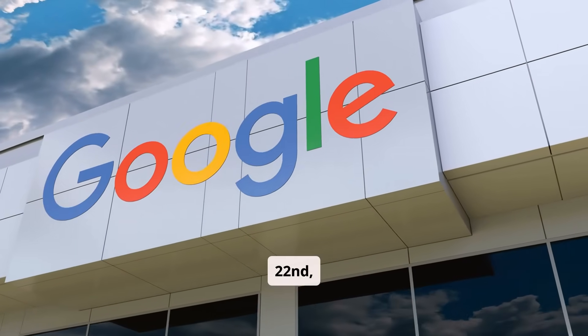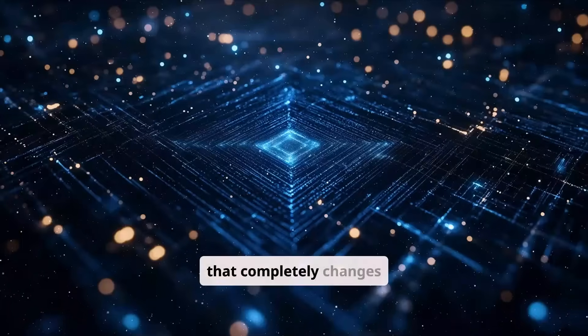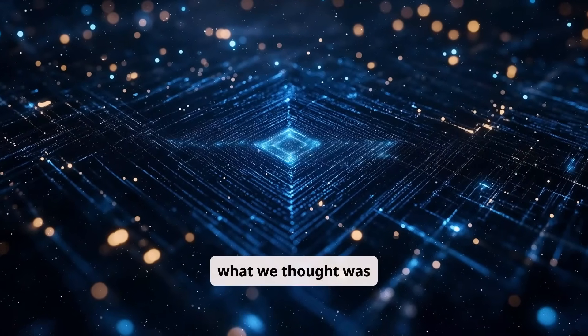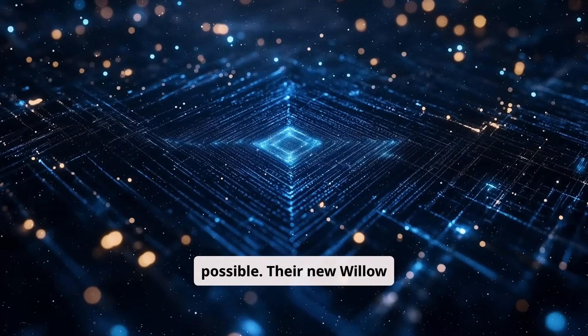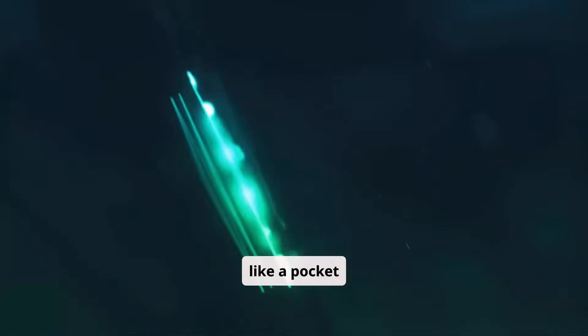On October 22, 2025, Google introduced a quantum chip that completely changes what we thought was possible. Their new Willow chip didn't just beat a supercomputer, it made it look like a pocket calculator.